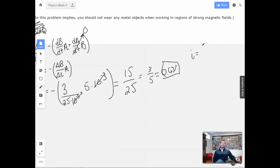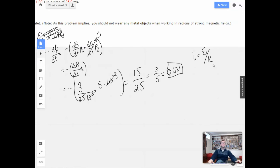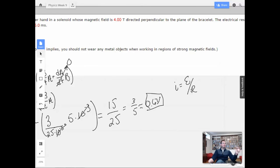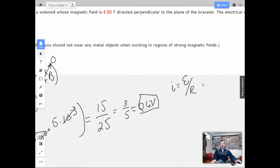All right, so current equals voltage over resistance. This is EMF voltage, same thing. I just use EMF because we're talking about changing magnetic fields with respect to induced voltages. So, we have 0.6. Now, I'm going to call it 6 times 10 to the negative first